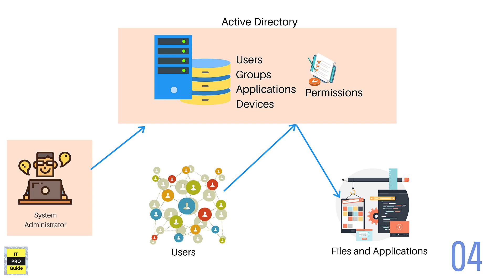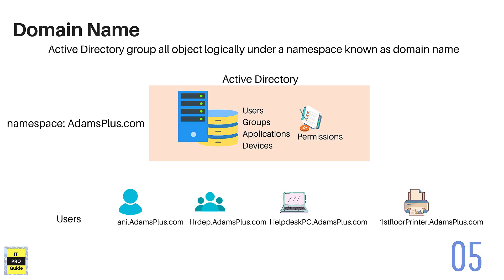For example, if a user resigns from the organization and you want to disable all access to applications, files and everything, it is just a matter of disabling the user account from the Active Directory — instead of going to all the files and applications and removing the user's permissions. So I hope how Active Directory works is now clear.